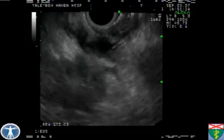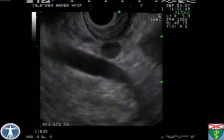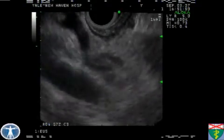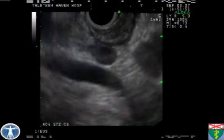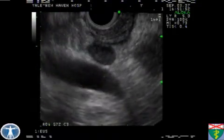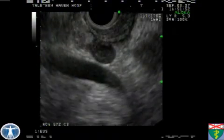A hypoechoic 7-millimeter lymph node is seen between the portal vein and the mass.